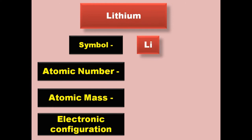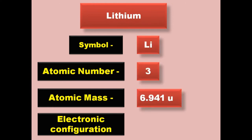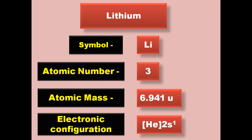Lithium has symbol Li, atomic number 3, atomic mass 6.941, electronic configuration [He] 2s1. Lithium is an alkaline metal and exists in solid form at room temperature.